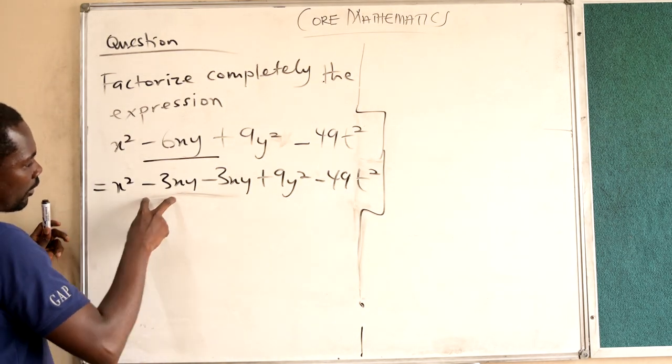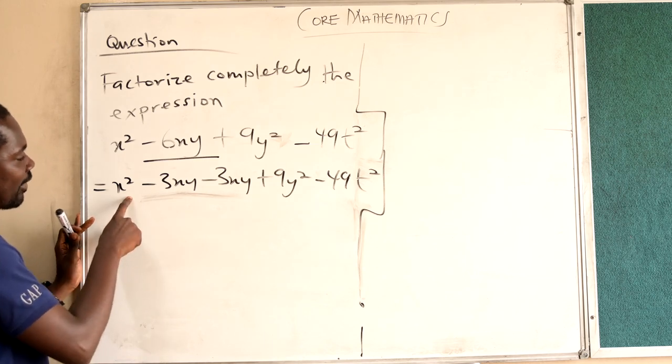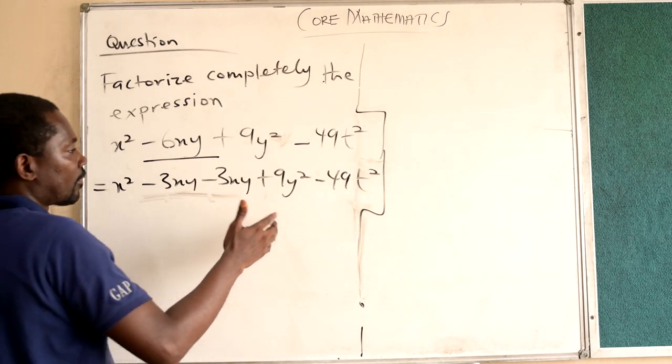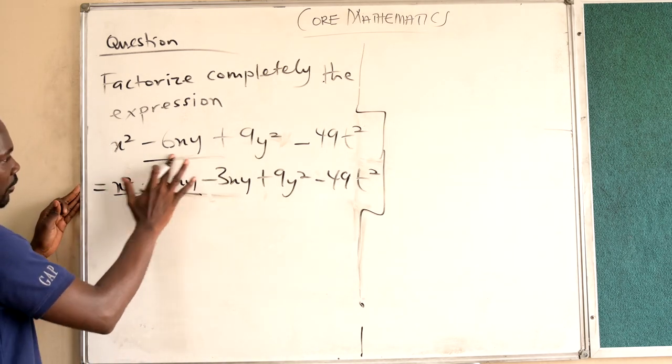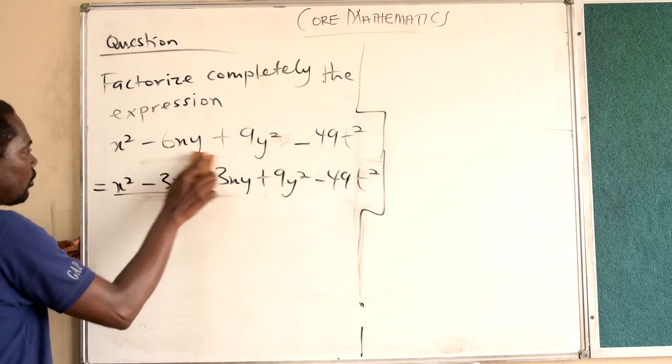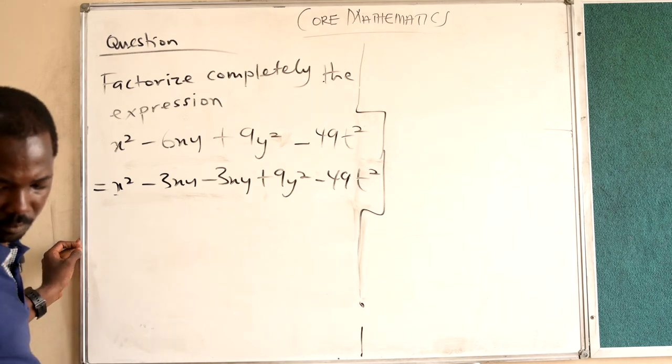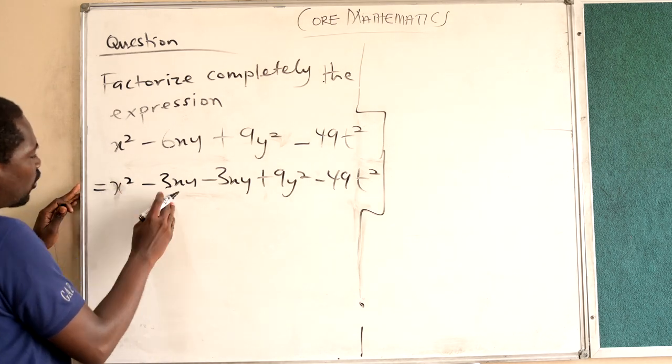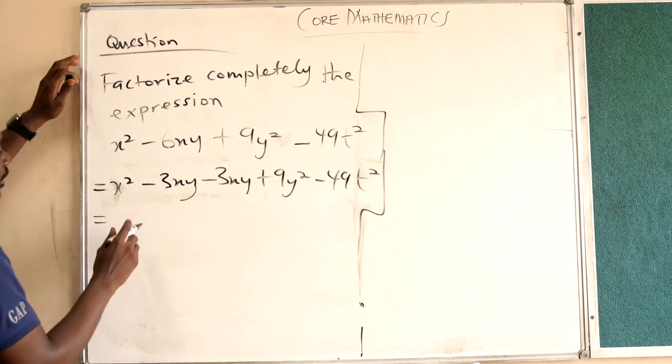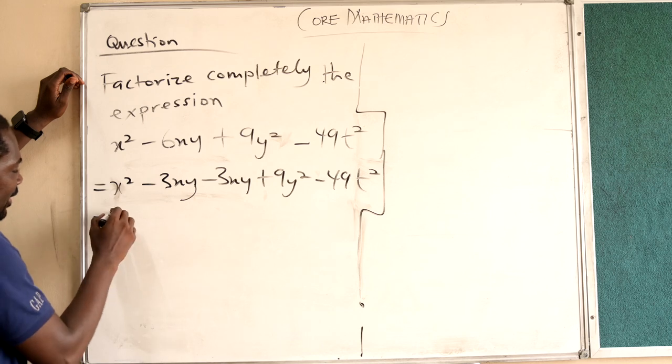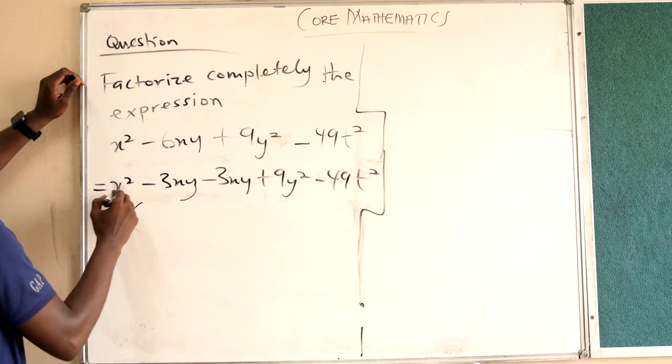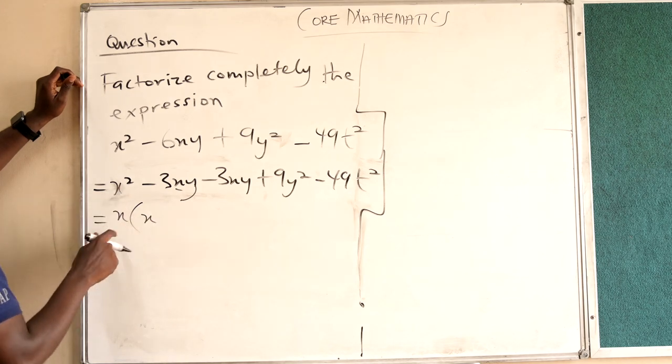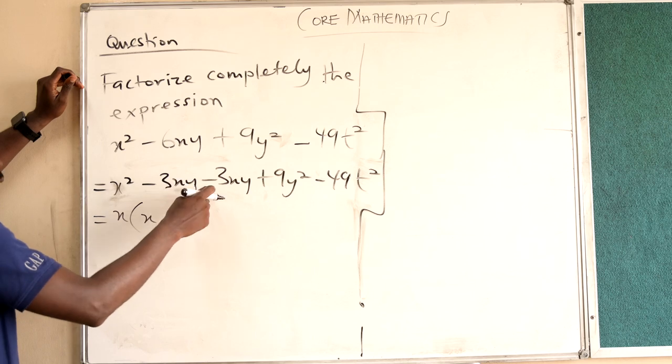Now I can work on the first four terms: x squared, negative 3xy, negative 3xy, and 9y squared. When I factor the first two terms, x squared minus 3xy, the common factor is x. So I bring x out. x times x will give you x squared, and x times negative 3y will give you negative 3xy.